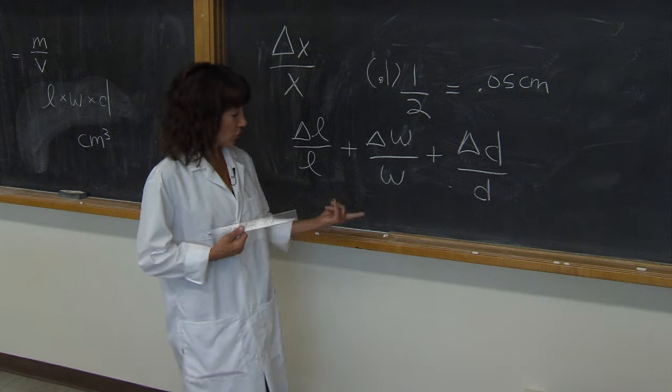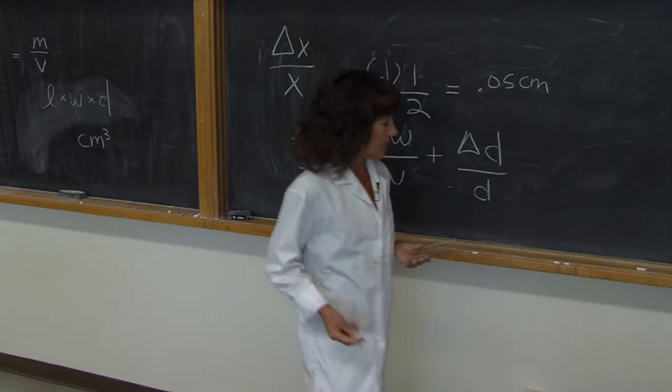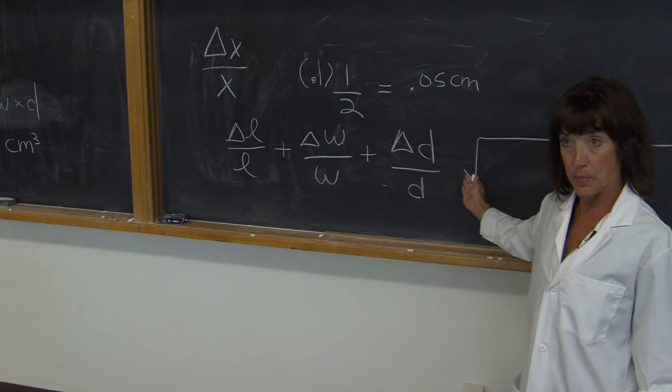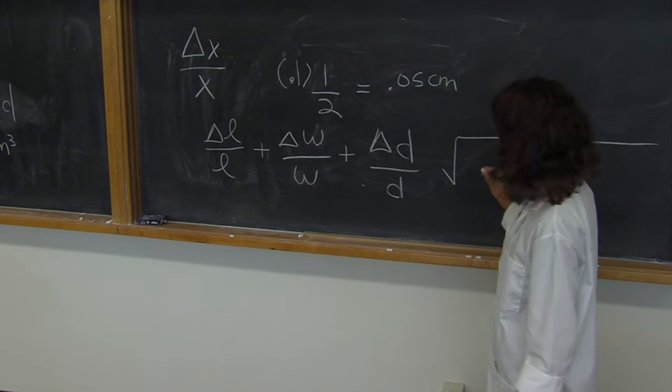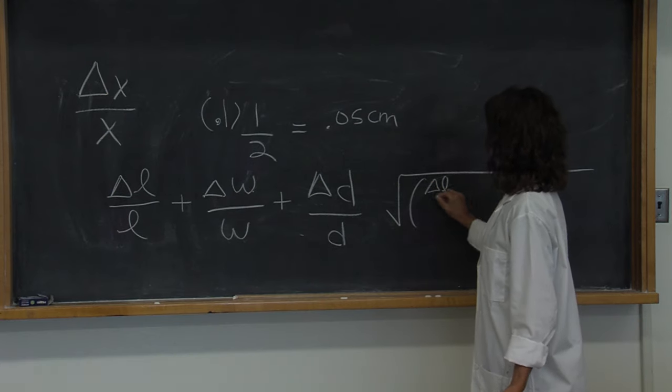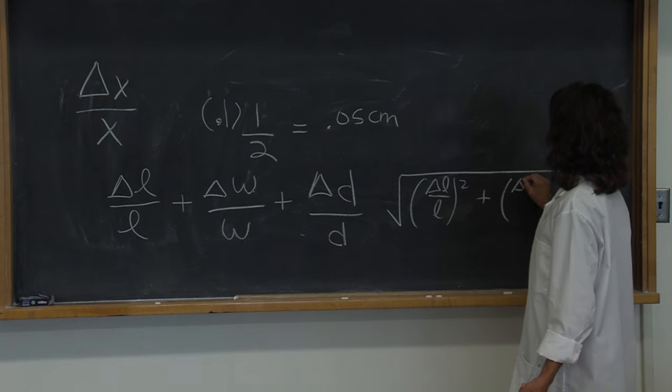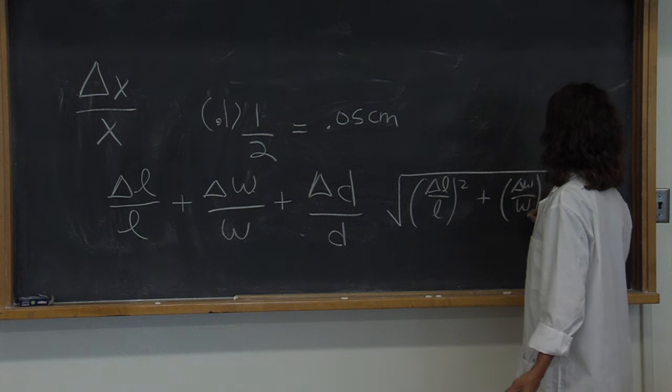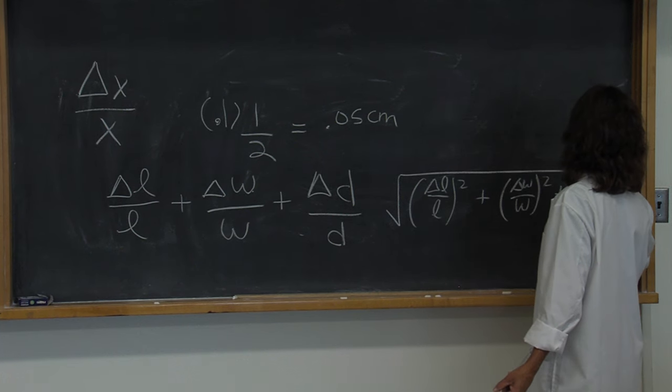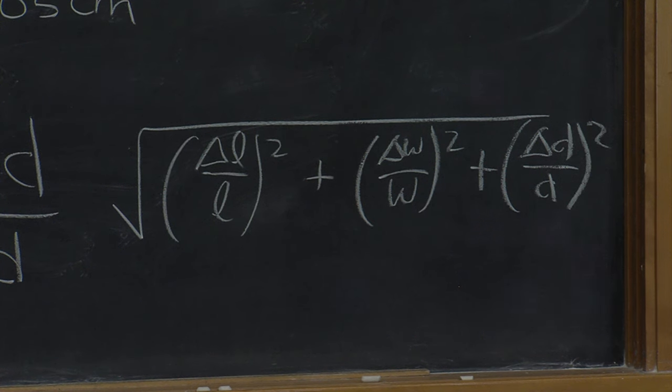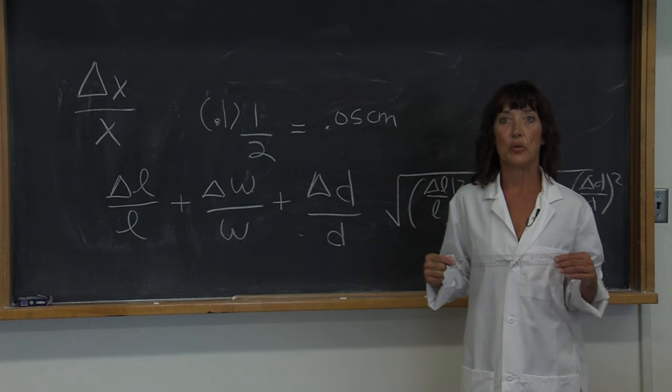A more accurate version of this formula would be to take the square root of the sum of these components squared. So we'll take the square root of delta L over L squared, plus delta W over W squared, plus delta D over D squared. And your instructor will let you know which one he or she wants you to use.